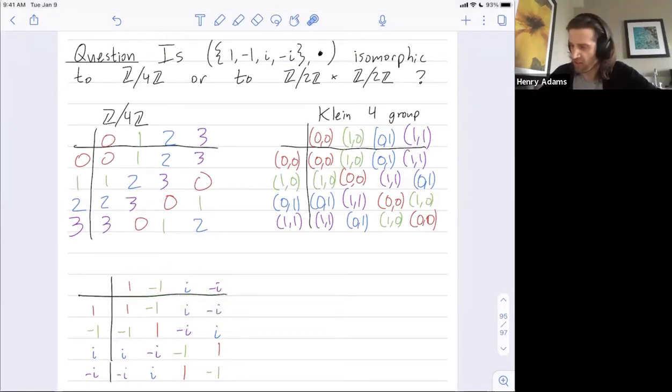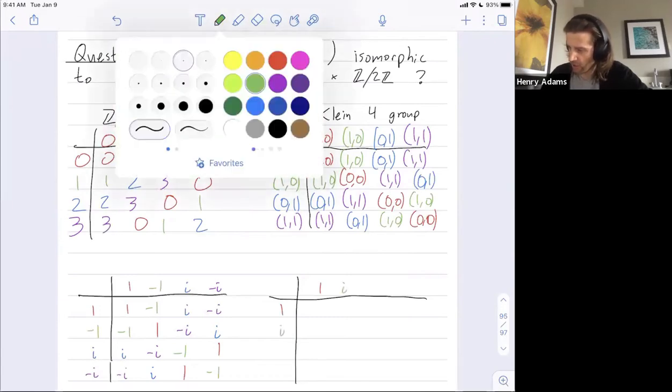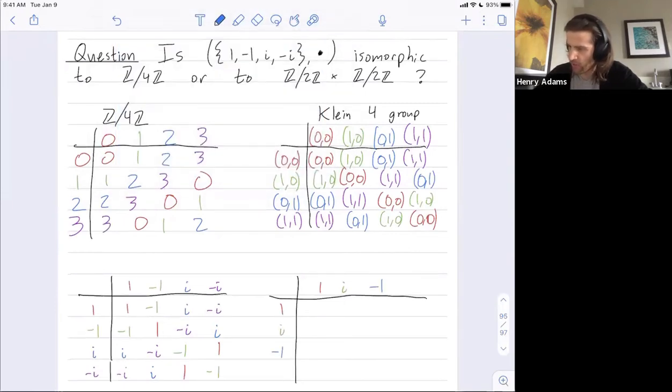Let me show you the right way to see which group this is isomorphic to. Put one first. But then put i. i is actually going to be a generator of this group. And then next put, oh, I should make i green. Next, put negative one, which is going to be our generator squared. i squared is negative one. And then put negative i, which is going to be our generator cubed.